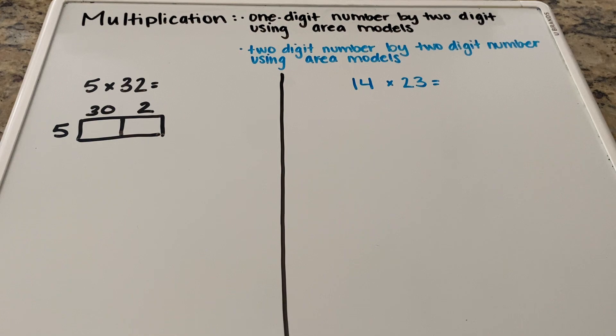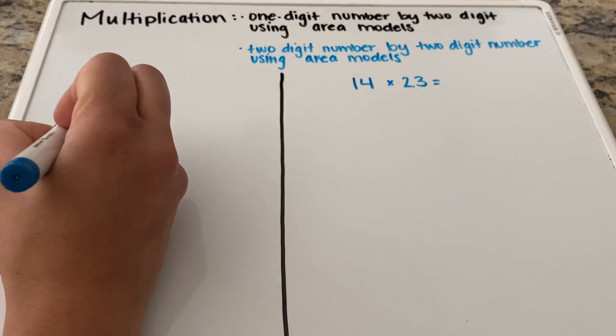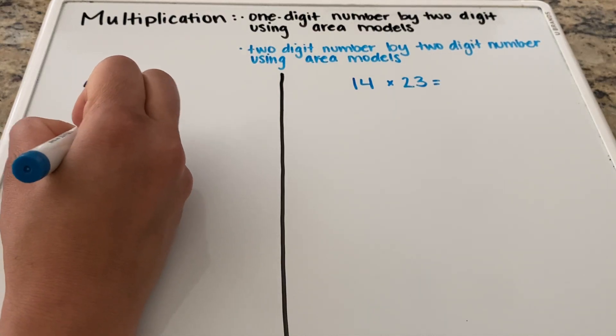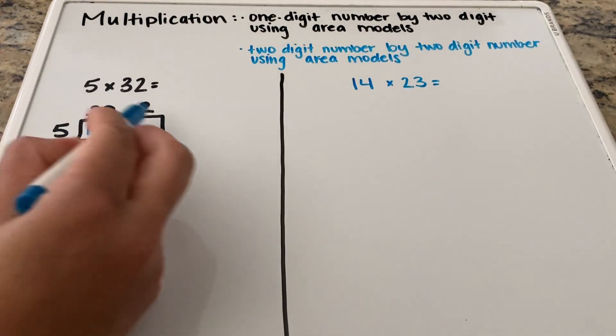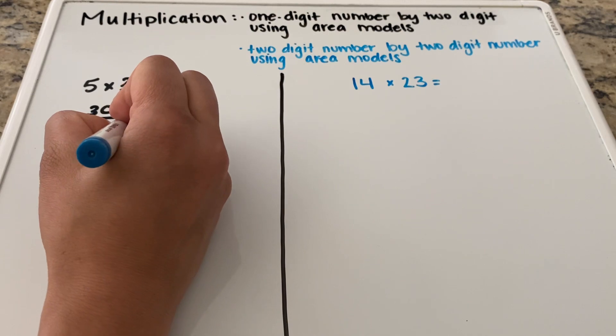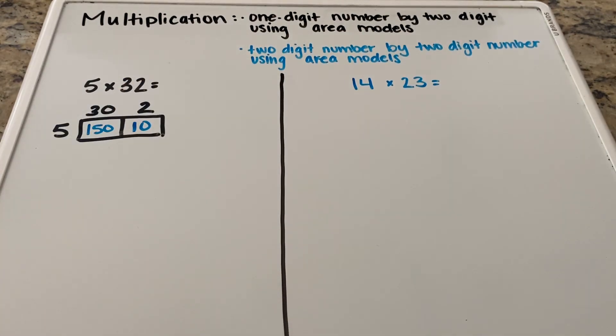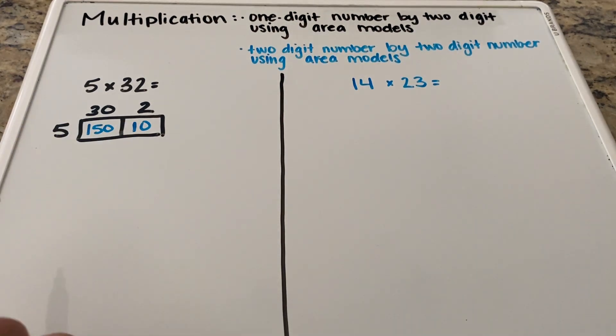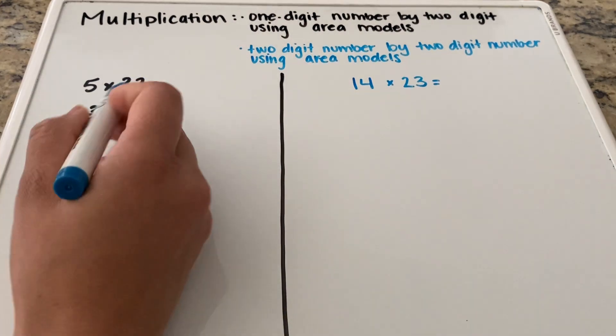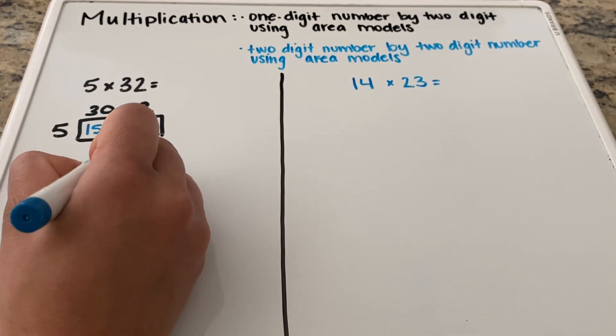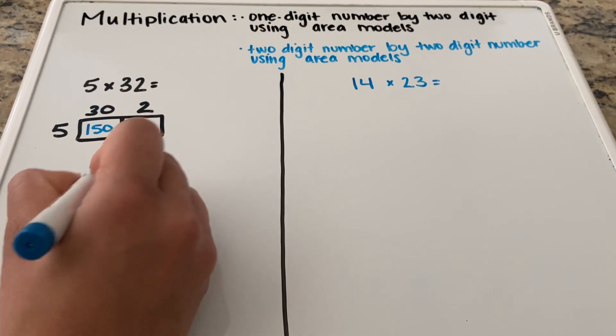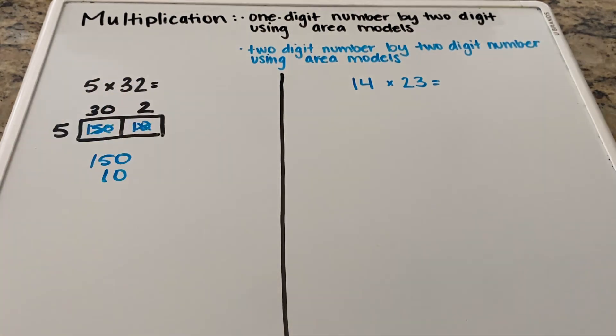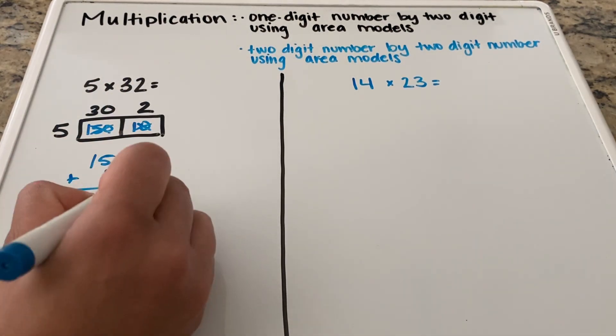From here we are going to multiply across. So we have five times 30 which is 150 and then we have five times two which is 10 and so now our boxes are all filled in. From here the next step for common core math is going to be taking everything in the blue box. So we have our 150. We have our 10.